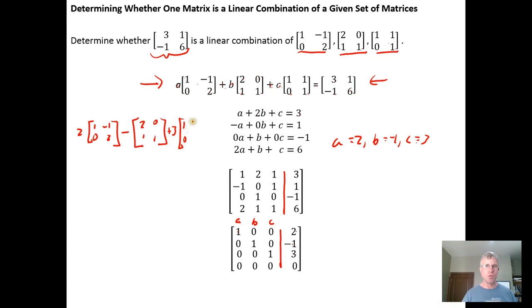plus 3 times the last matrix, 1, 0, 1, 1. And that's going to add up to the matrix we're interested in. So indeed, this matrix is a linear combination of the other three.